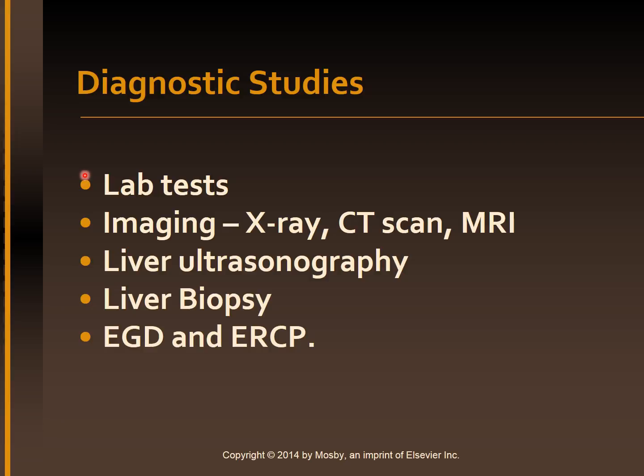Plain x-ray of the abdomen may show hepatomegaly, splenomegaly, or massive ascites. CT scan or MRI may be done. Liver ultrasound is useful to detect portal vein thrombosis and the direction of portal blood flow, and also to detect ascites, biliary stones, and obstruction. Liver biopsy may be necessary to detect exact pathology, but the risk of bleeding is always present, and steps to minimize bleeding are to be taken.